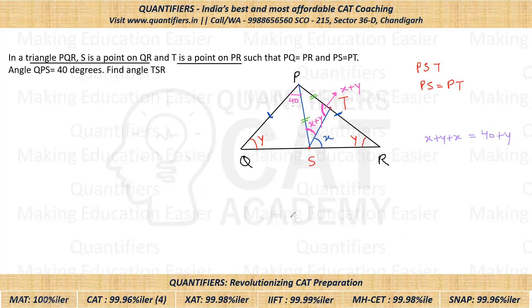From this equation, y gets cancelled on both sides, and we have 2x equal to 40, which gives us x equal to 20. Since we assumed angle TSR to be x, the answer is angle TSR = 20 degrees.